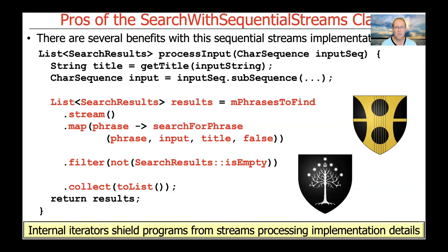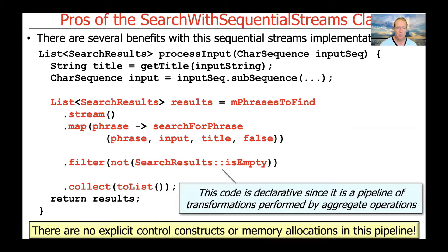Why is this helpful? Because internal iterators shield programmers from all kinds of implementation details of iteration. All that stuff is subsumed into the mechanisms provided by the Streams framework. There are no control constructs explicitly visible in the code — those things are handled by operations like filter, which is basically the functional version of an if statement.